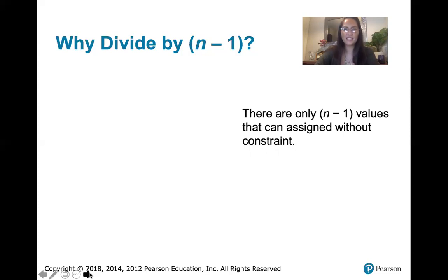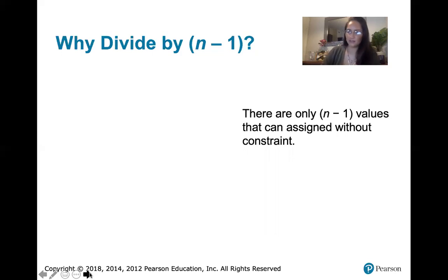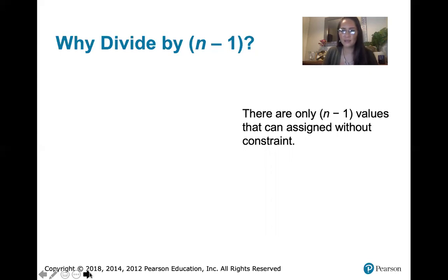The best reason I can give you is that when you have a data set with n values, there are only n minus one values that can be assigned without constraint. So let's say you're inviting five people to your house and you've got five seats at your dinner table. If you put one friend in the first seat, another in the second, a third in the third seat, and a fourth friend in the fourth seat, then that last friend — there's only one seat left. There are n minus one values that can be assigned freely, but there's always one you're stuck with.